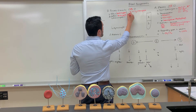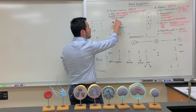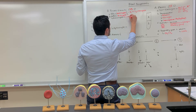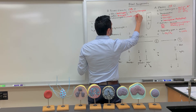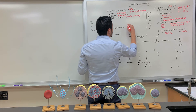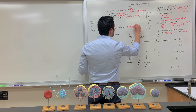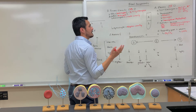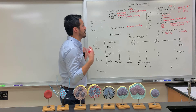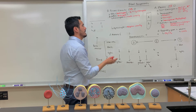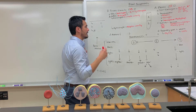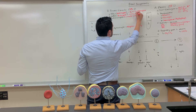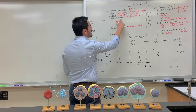For white blood cells, they are components for immunity. Granulocytes are players for innate immunity, while agranulocytes are mainly for adaptive immunity. Generally speaking, innate immunity is the first immune response whenever a pathogen breaches a barrier, and adaptive immunity takes over if the innate immune players can't get rid of it. Granulocytes contain granules visible in the cytoplasm of these cells.